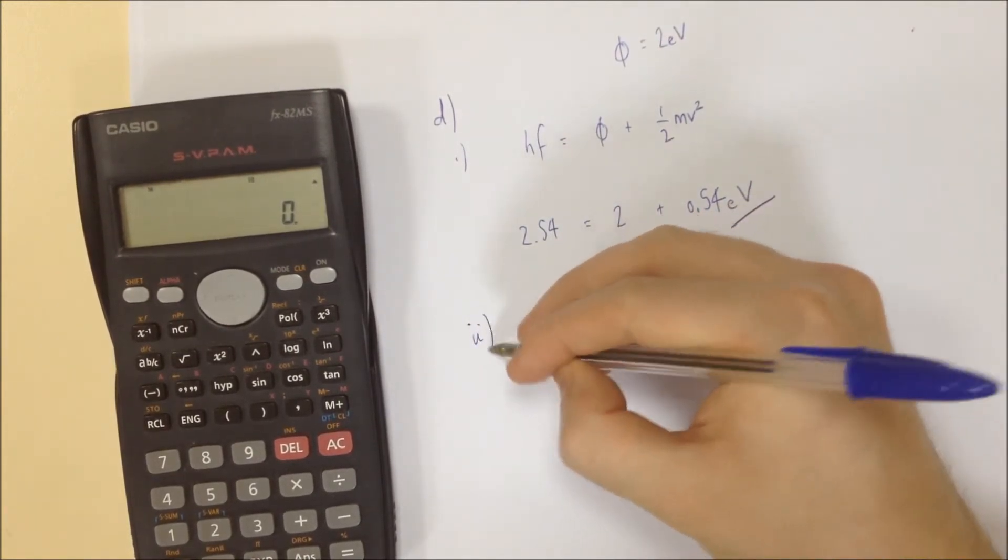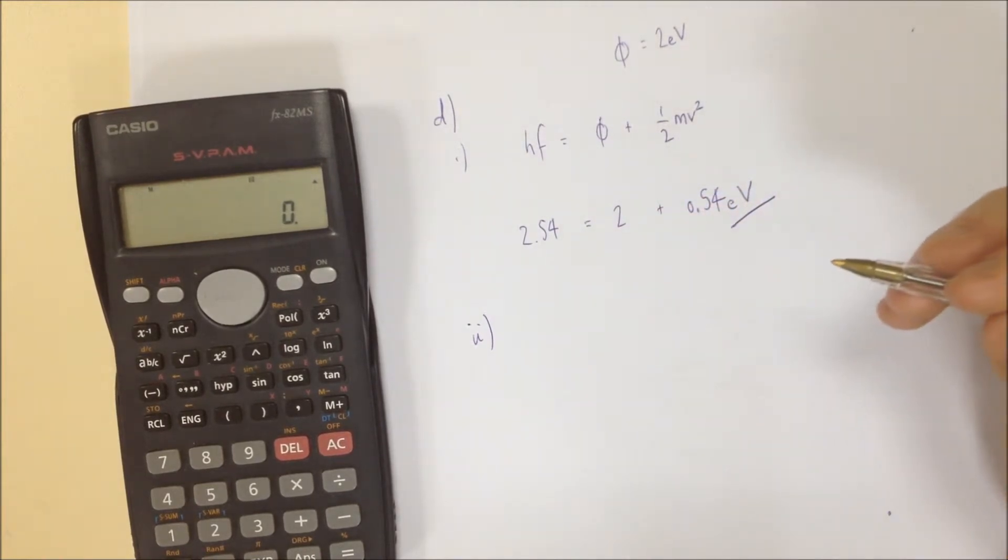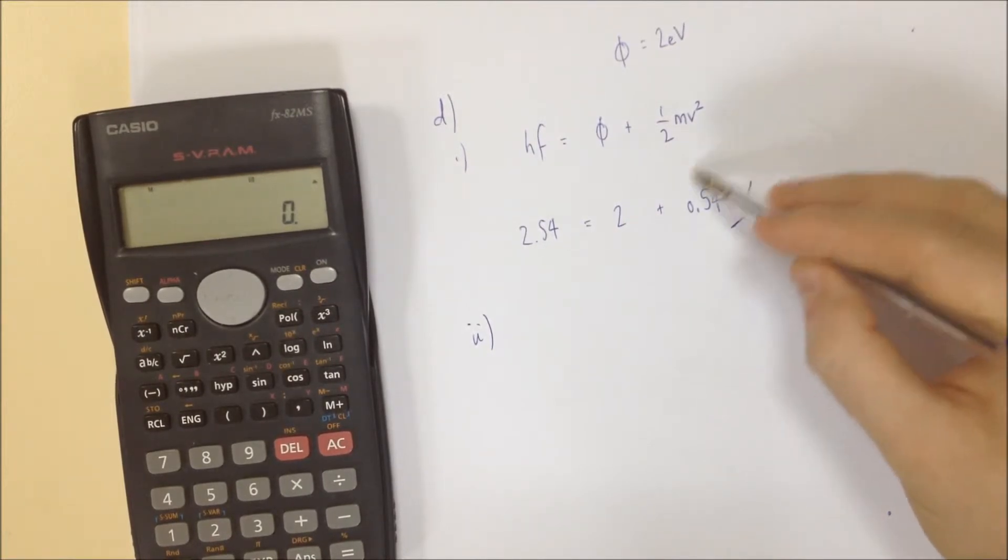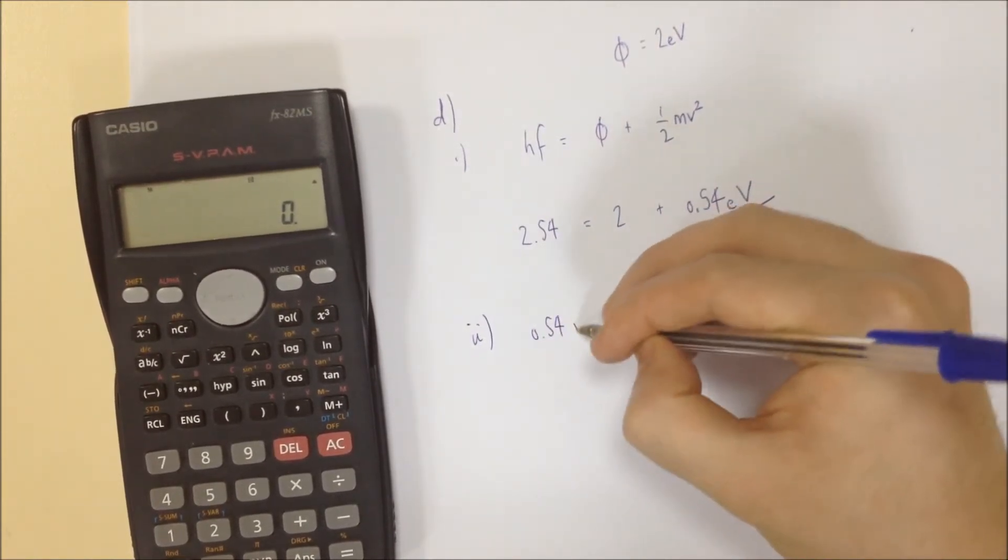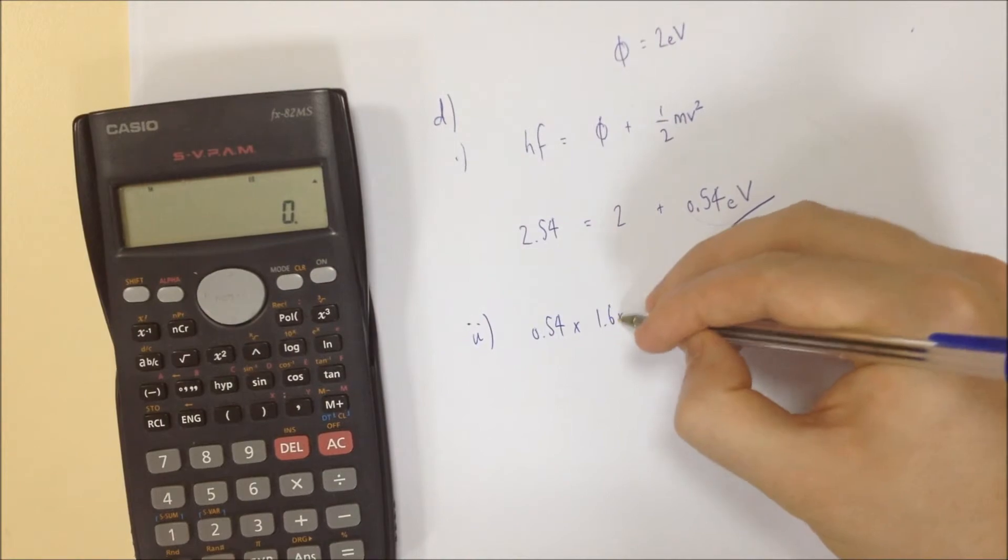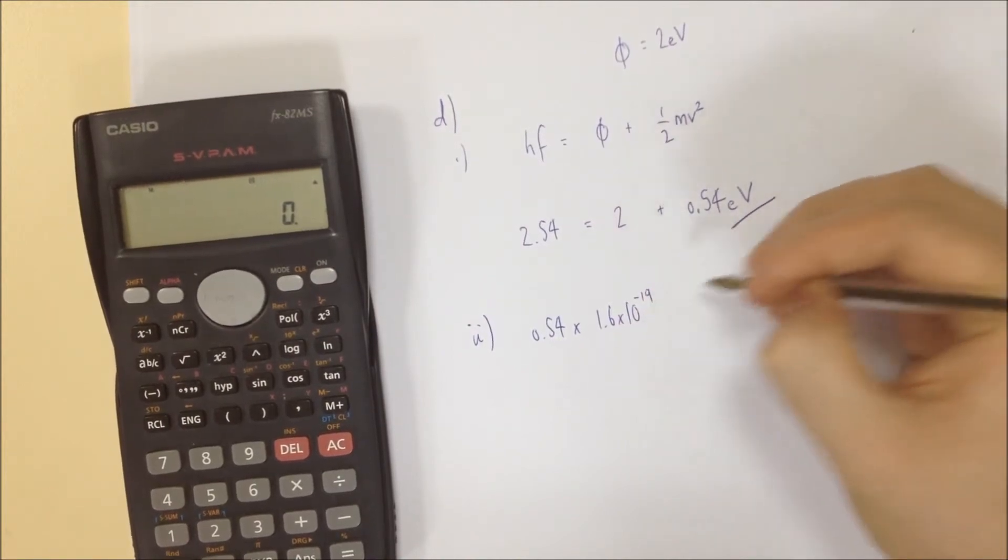Part II is going to ask us to then ask what speed these electrons would have. It says ignore relativistic effects. We don't know anything about that. We'll touch on it in year 13, but still never fully calculate it at year 13. So what we're going to do here is we're going to say that the energy is 0.54 electron volts. First of all, we convert to joules. So we do 0.54 multiplied by 1.6 times 10 to the minus 19,